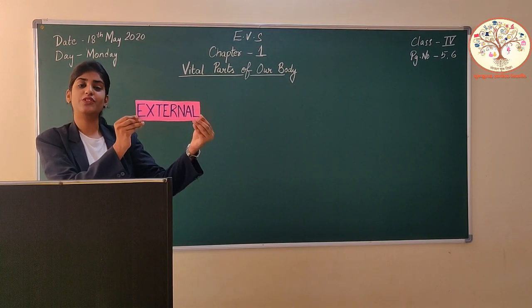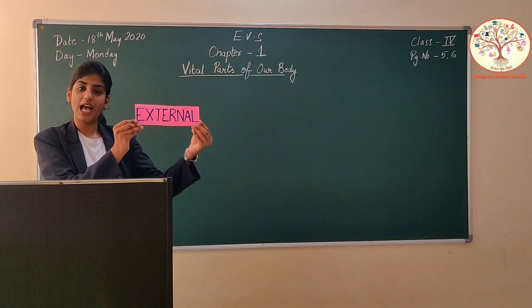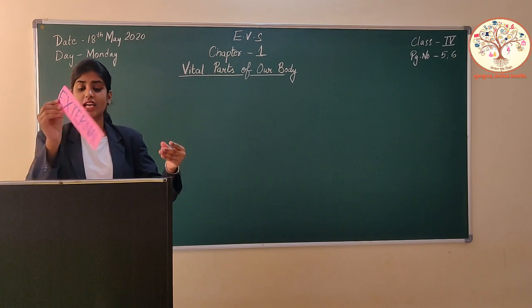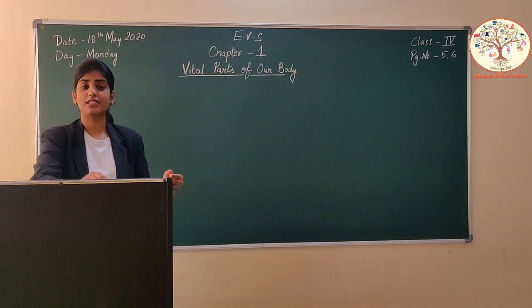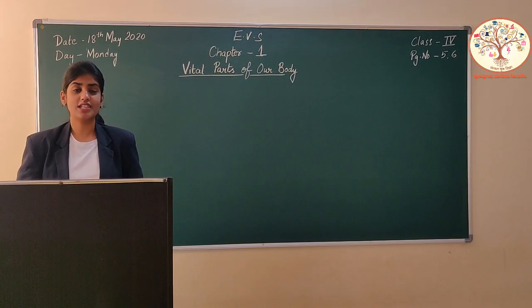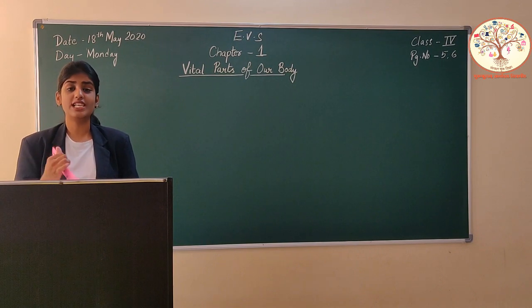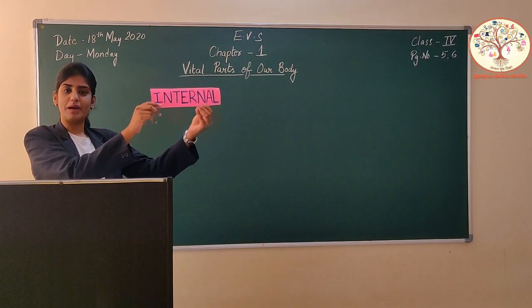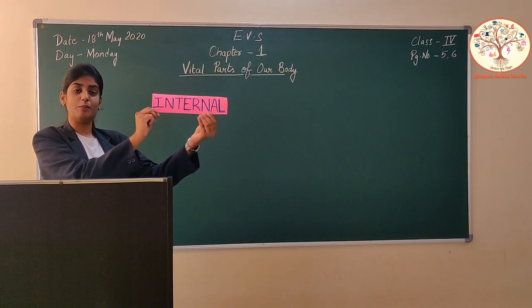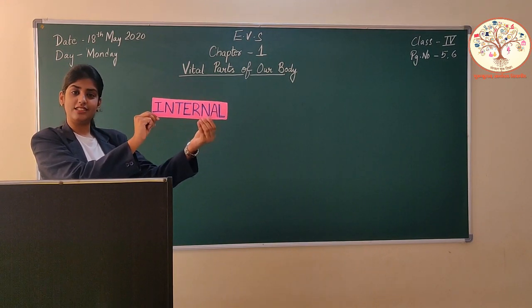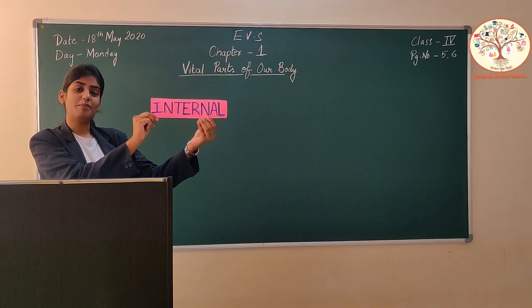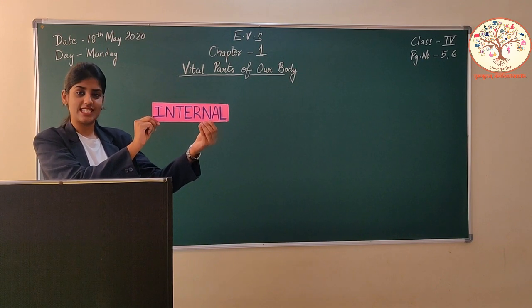External means what we can see from outside. And the parts which we cannot see, such as lungs, kidneys, and heart, are known as internal parts of our body. Internal means something present inside.